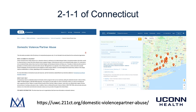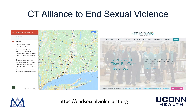211 is a publicly funded resource for many different questions in Connecticut and is a huge resource for domestic violence and partner abuse, including a map where resources and shelters can be found throughout the state with contact information and hours. There is also the Connecticut Alliance to End Sexual Violence, which lists all member organizations throughout the state with contact information, locations, hours, and information for patients experiencing sexual violence. I encourage you to become familiar with the resources in your area around domestic and sexual violence.